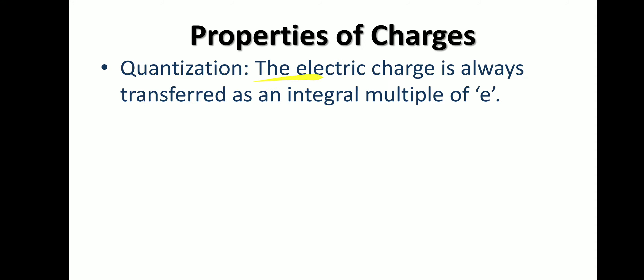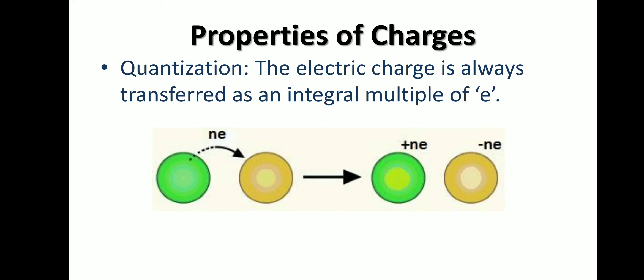The next property is quantization. Just as light travels from the sun to earth in the form of packets of photons, charges are transferred in packets of electrons. The electric charge is always transferred as an integral multiple of e. An atom losing some electrons becomes positively charged, while the atom gaining those electrons becomes negatively charged. The number of electrons transferred, n, is always an integer.